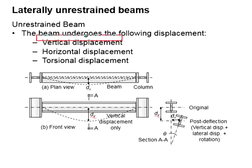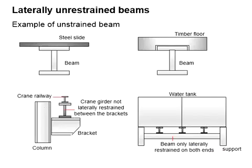Unrestrained beams normally undergo vertical displacement, horizontal displacement, and torsional displacement. Under load, the member can displace greatly. These are some examples of unrestrained beams.